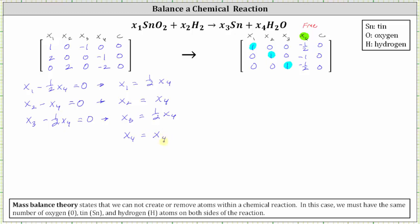So these four equations must be true in order for the chemical reaction to be balanced. Because we have the free variable x sub four, we often parameterize these equations in terms of t, by letting the free variable x sub four equal t. So if we let x sub four equal t, we have x sub four equals t as the fourth equation. The first equation is x sub one equals one half t. The second equation is x sub two equals t. The third equation is x sub three equals one half t. It's common to express the solution in this form using the free variable x sub four, as well as parameterizing the equations in terms of t.